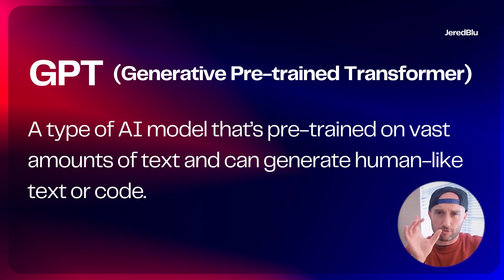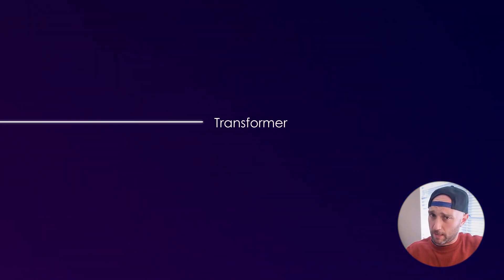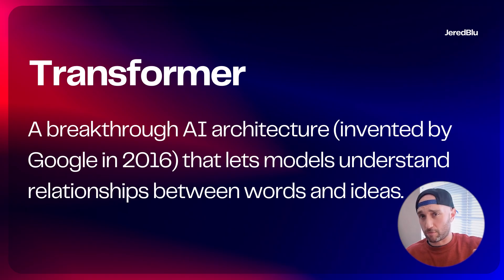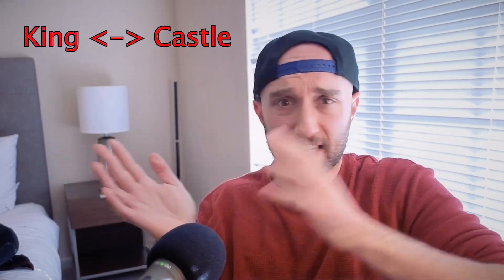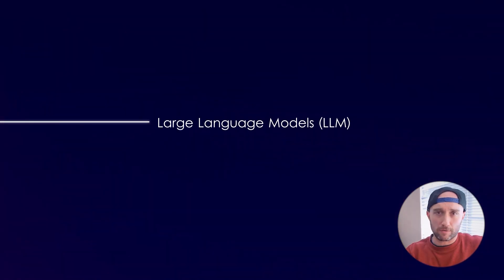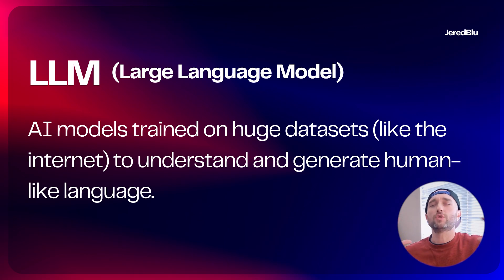The GPT in ChatGPT stands for Generative Pre-trained Transformer. Transformers were the major breakthrough that gave birth to LLMs. They were invented by Google, and they power the magic behind all LLMs like ChatGPT, Claude, Perplexity, Llama, etc. Essentially, what transformers allow AI to do is understand the semantic similarity between words, like king and castle. LLMs stand for Large Language Models — they use transformers and are trained on huge datasets, like think the entire internet. This is why we can engage in conversations that feel natural and human-like.